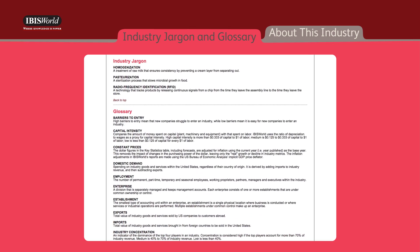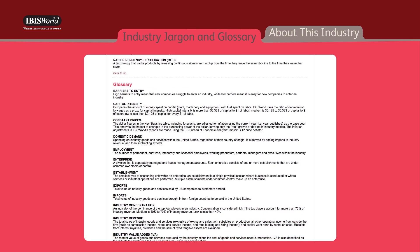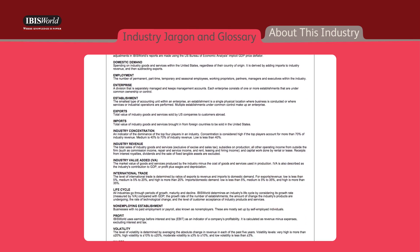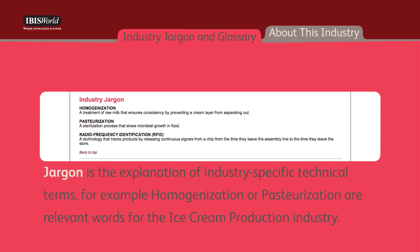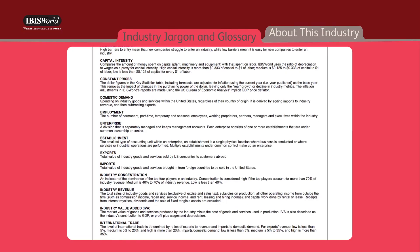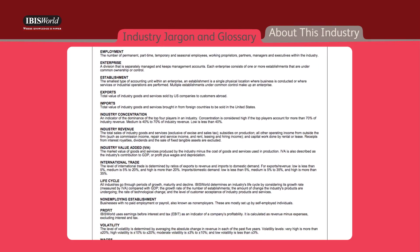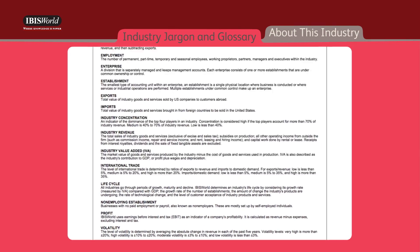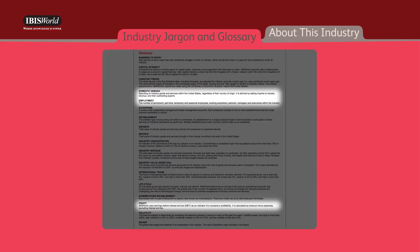The Jargon and Glossary section provides clarification on terms used throughout the report. Jargon is the explanation of industry-specific technical terms — for example, homogenization or pasteurization are relevant words for the ice cream production industry. The Glossary is standard in all reports and includes brief definitions of general economic terms, like domestic demand, employment, and profit.